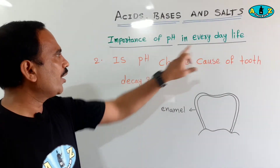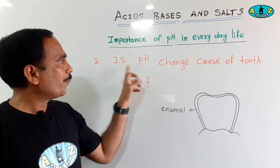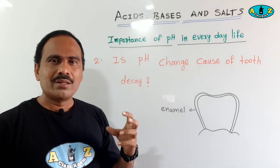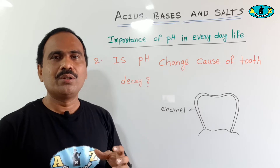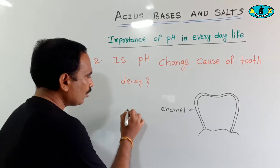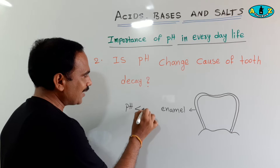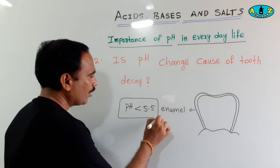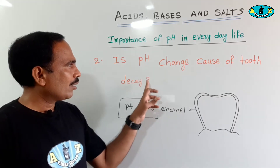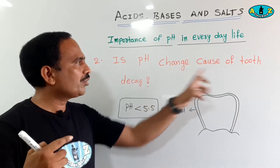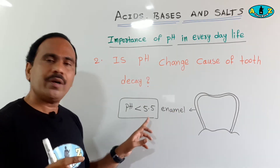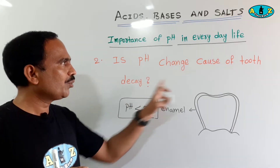Next use of pH in everyday life: is pH change the cause of tooth decay? Yes, the pH change in our mouth causes tooth decay. If our mouth pH value falls below 5.5, then tooth decay starts in our mouth.